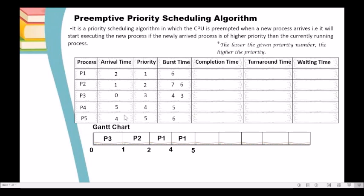At time 5, P4 arrives in the ready queue. We compare the priority of P4 and P1. The priority of P4 is 4, the priority of P1 is 1 — P1 has higher priority than P4, so we continue executing P1. Since at time 5 all processes are now in the ready queue, the algorithm will now work like a simple non-preemptive priority scheduling algorithm.